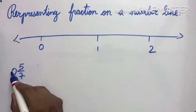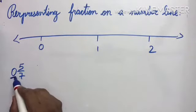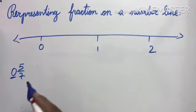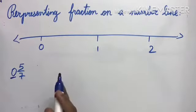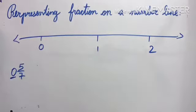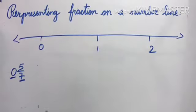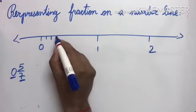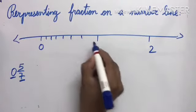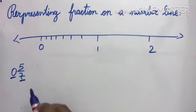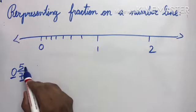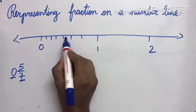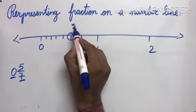The whole number decides between which two numbers on the number line the fraction falls. Since the whole number is 0, it's between 0 and 1. We divide that segment into 7 equal parts (the denominator). Counting from the start: 1, 2, 3, 4, 5, 6, 7. The numerator 5 tells us to place the fraction at the 5th part — so 5/7 is placed there.